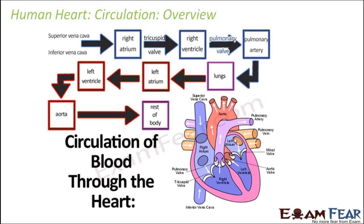Let us first look at the circulation of blood and from where the blood flows. The deoxygenated blood comes from the vena cava — several veins joined together to form the vena cava — into the right auricle. The right auricle and the right ventricle are separated by the tricuspid valve, so when the tricuspid valve opens, blood enters into the right ventricle.